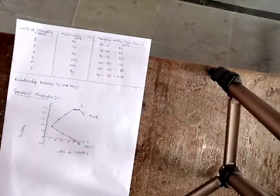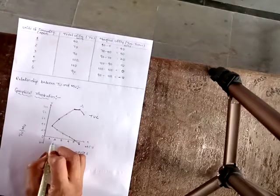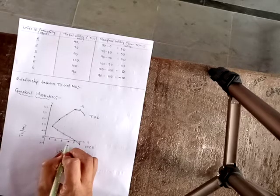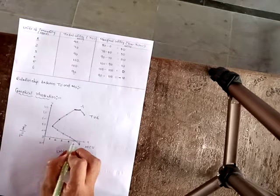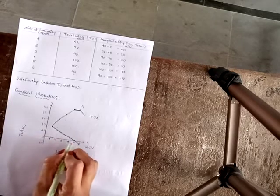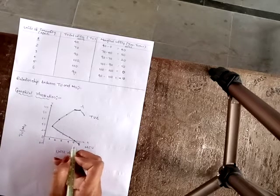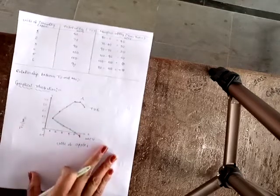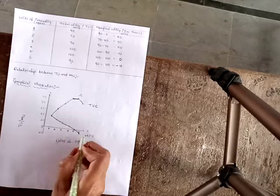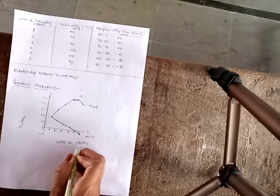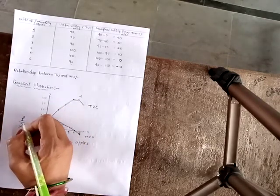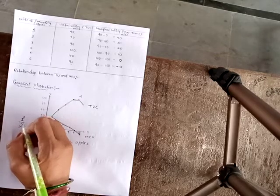The marginal utility curve shows values decreasing: at the 4th apple it is 10, at the 5th apple it is zero, and at the 6th apple it is minus 10. In the diagram, x-axis represents units of apples and y-axis represents total utility and marginal utility. The total utility curve slopes upward from left to right and reaches a maximum stage.